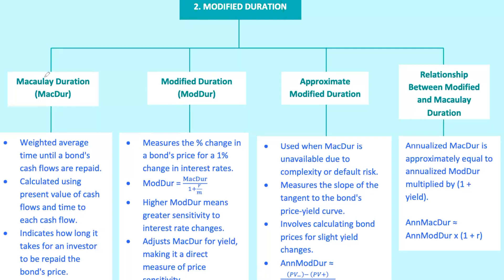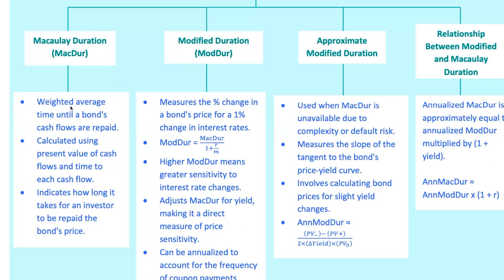First up, we've got Macaulay duration. Think of Macaulay duration as the center of gravity for a bond's cash flows. It's a measure of the weighted average time until you receive all of a bond's cash flows — coupons and principal. Macaulay duration gives you a rough idea of how long it takes to get your money back from a bond, considering the time value of money. You take the present value of each cash flow, divide it by the bond's current price, and multiply it by the time until each cash flow occurs. It's like saying, how much weight does each payment carry based on when it arrives?